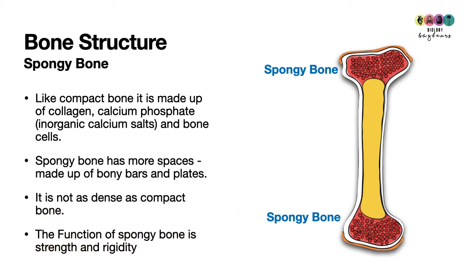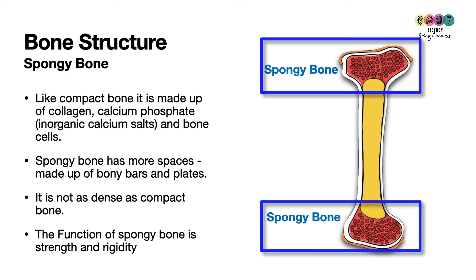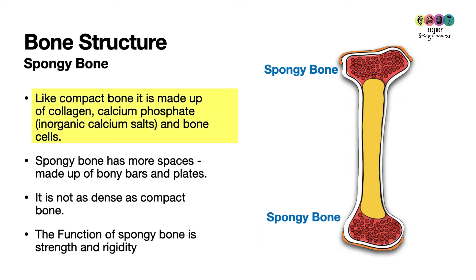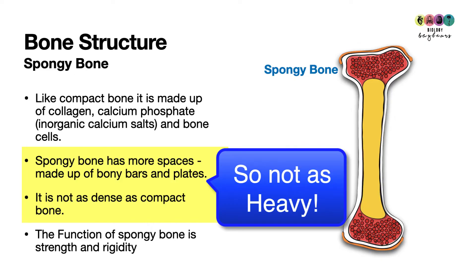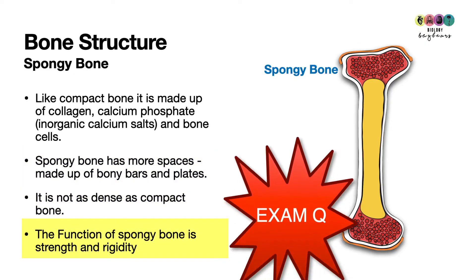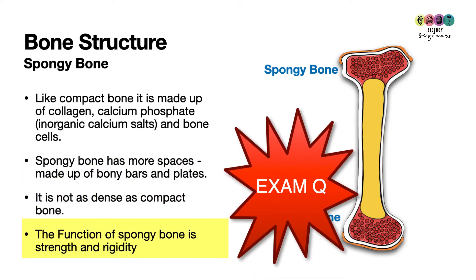Another type of bone is spongy bone, found mostly in the epiphyses at the ends of the bones. Like compact bone, it's made of the same materials — collagen, calcium phosphate, and bone cells — but spongy bone is not as dense as compact bone. It has more spaces and is made up of bony bars and bony plates. Because it has lots of spaces it's not as heavy, and the function of spongy bone is also to provide strength and rigidity.